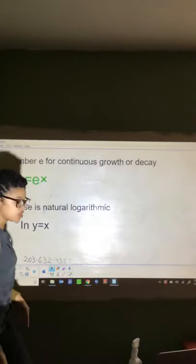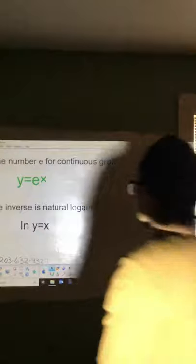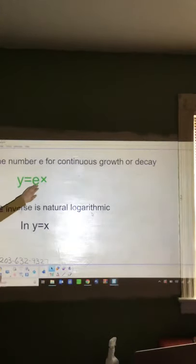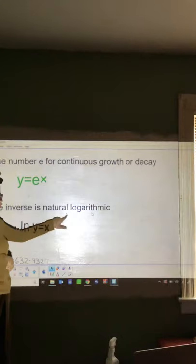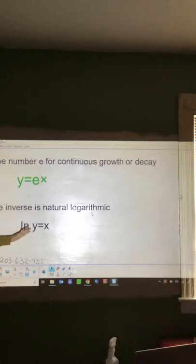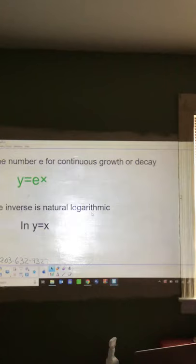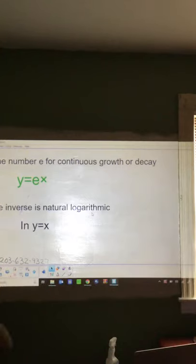The number e is a type of function used for continuous growth or decay. E is represented as a number in higher mathematics. When you talk about exponential with e, the inverse is its natural log — so instead of the regular log function, it's a natural log. We're going to be using e because it's in the function that calculates continuous growth — something that continues to grow, like your bank account or savings account.